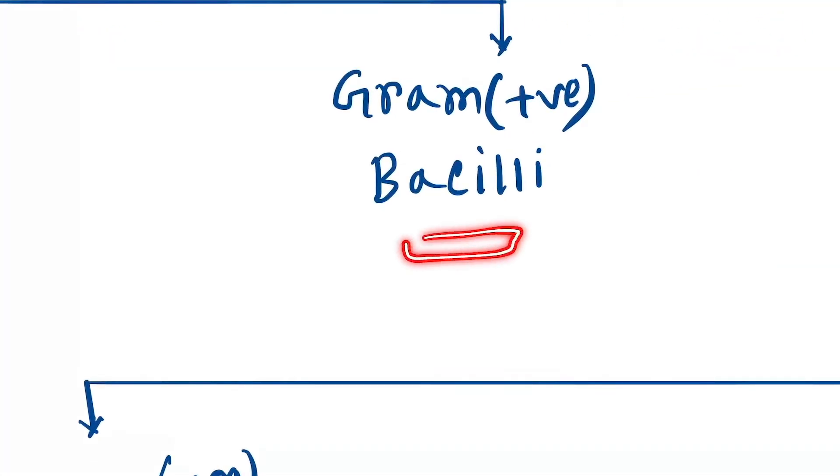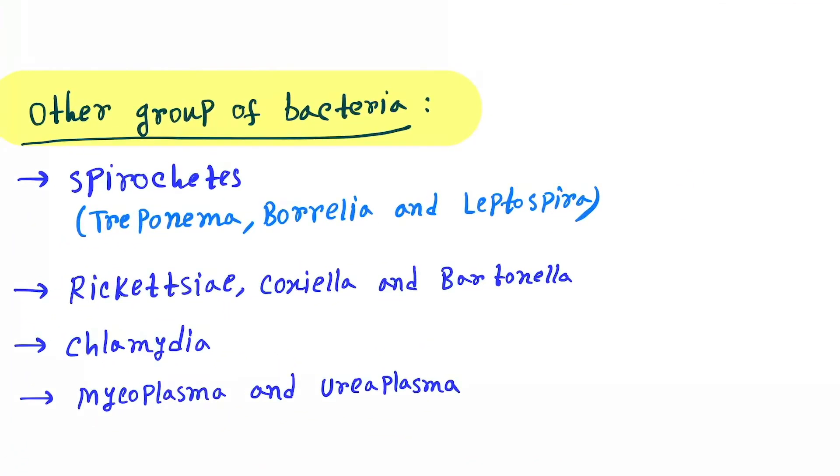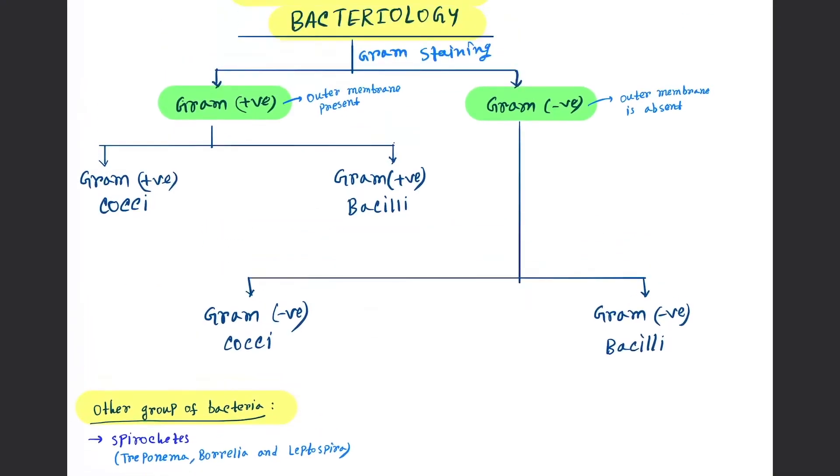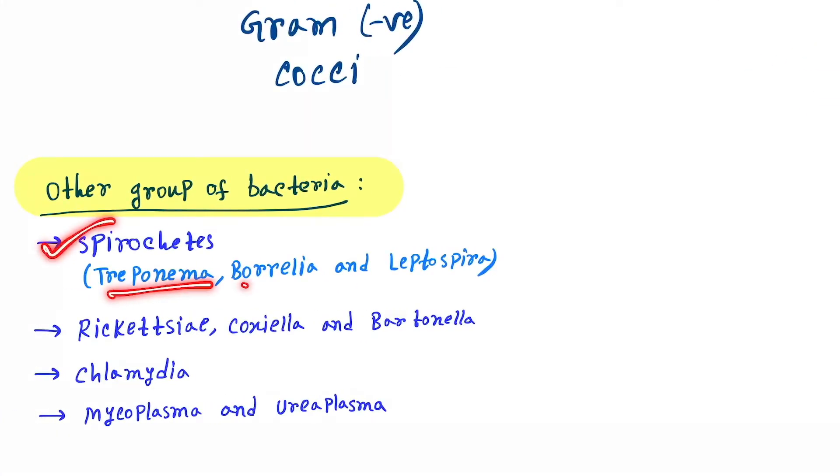These are other groups of bacteria not included in gram positive and gram negative. Here they are: spirochetes (Treponema, Borrelia, Leptospira), Rickettsia (Coxiella and Bartonella), Chlamydia, Mycoplasma, and Ureaplasma.